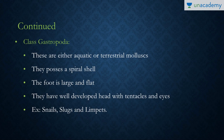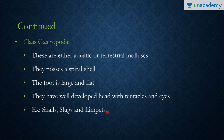Gastropoda may be either aquatic or terrestrial and have a spiral shell. As mentioned, gastropods undergo torsion and have a large flat foot. They have a well-developed head with tentacles and eyes. Examples include snails, slugs, and limpets. The slug is the slowest non-chordate.